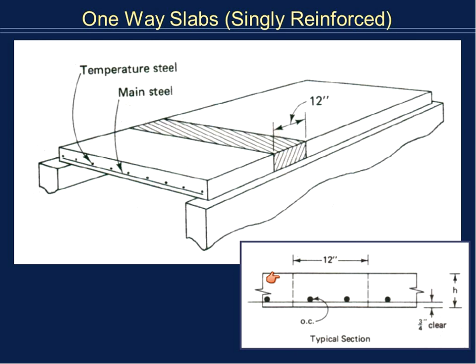Now some nomenclature on slab geometry. We'll consider a 12-inch width of slab. There are two types of reinforcing steel in the slab. First you have your main steel, which is always at the bottom of the slab and takes the tension. Then you have temperature steel, also known as shrinkage and temperature steel, which keeps the slab together to act as one unit. The slab has thickness H, and for an interior slab we're looking at a three-quarter inch clearance or cover.